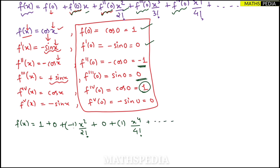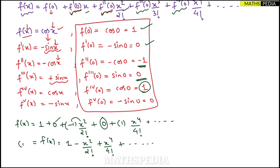Rewriting the result: f(x) = cos x = 1 - x²/2! + x⁴/4! + ... This is the power series representation of cos x obtained through the Maclaurin series formula, and this is the final answer.